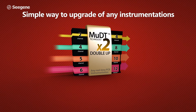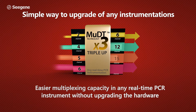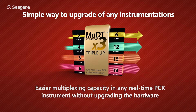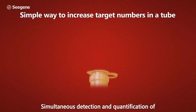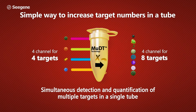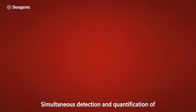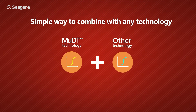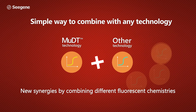MUDT increases the multiplexing capability of any existing real-time PCR instrument without requiring new hardware. MUDT increases the target numbers in a tube up to three times while still providing superior quantitative CT information. MUDT works with any fluorescent chemistry, opening new possibilities for the molecular diagnostic industry.